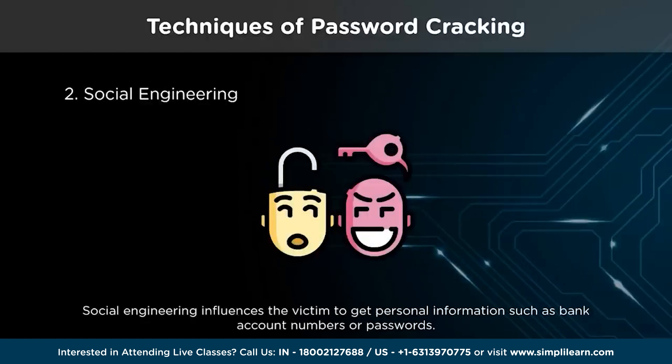Social engineering influences the victim to get personal information, such as bank account numbers or passwords. This strategy is popular among hackers because they realize that humans are the gateway to vital credentials and information. Through social engineering, hackers exploit age-old human tendencies rather than devising novel means to breach secure and advanced technologies. Many firms either lack adequate security or are overly friendly and trustworthy, allowing access to critical facilities based on a uniform or a sob story.